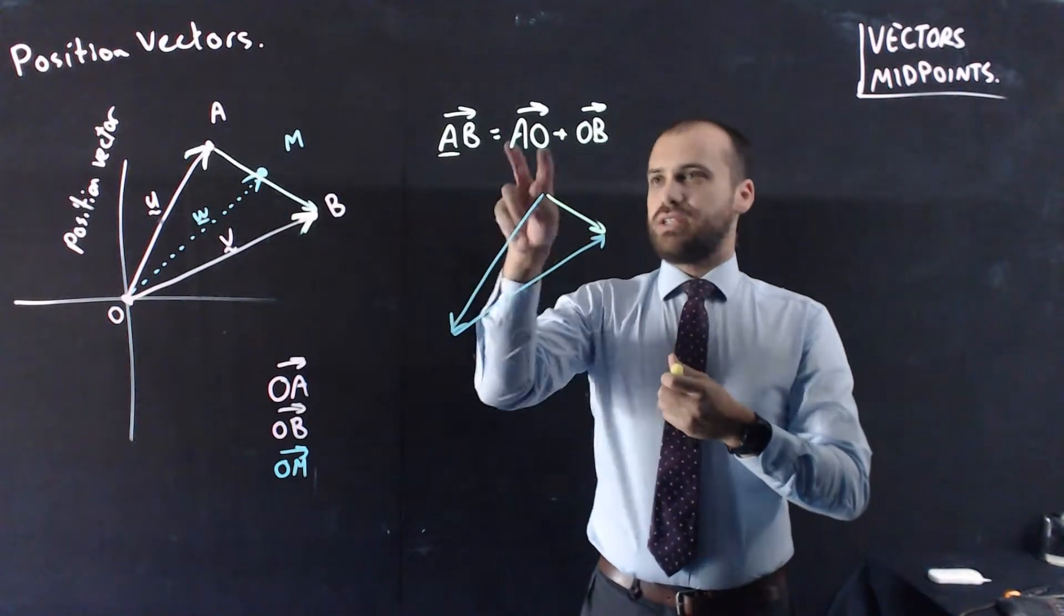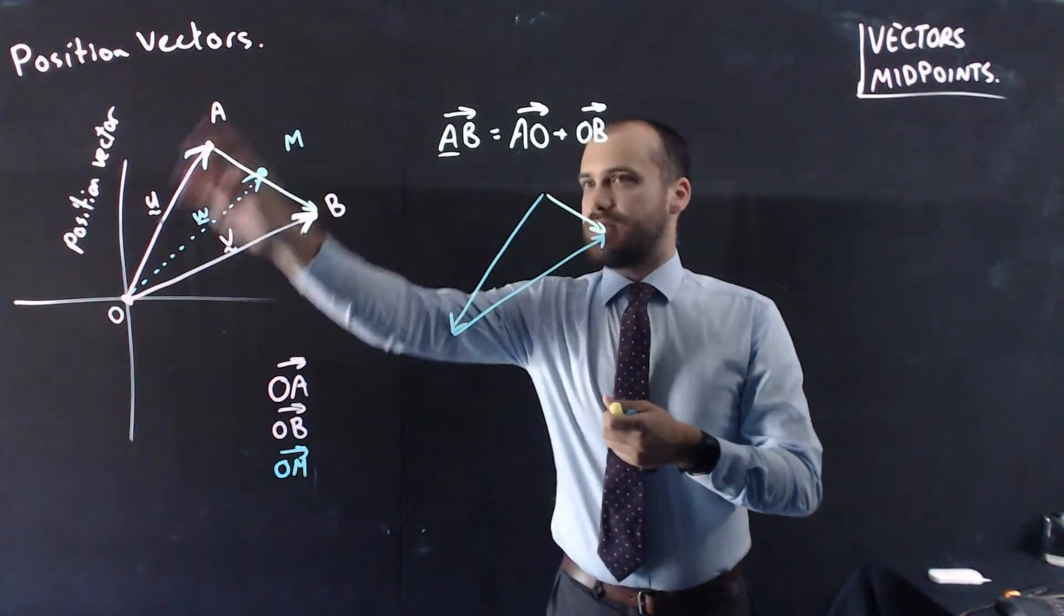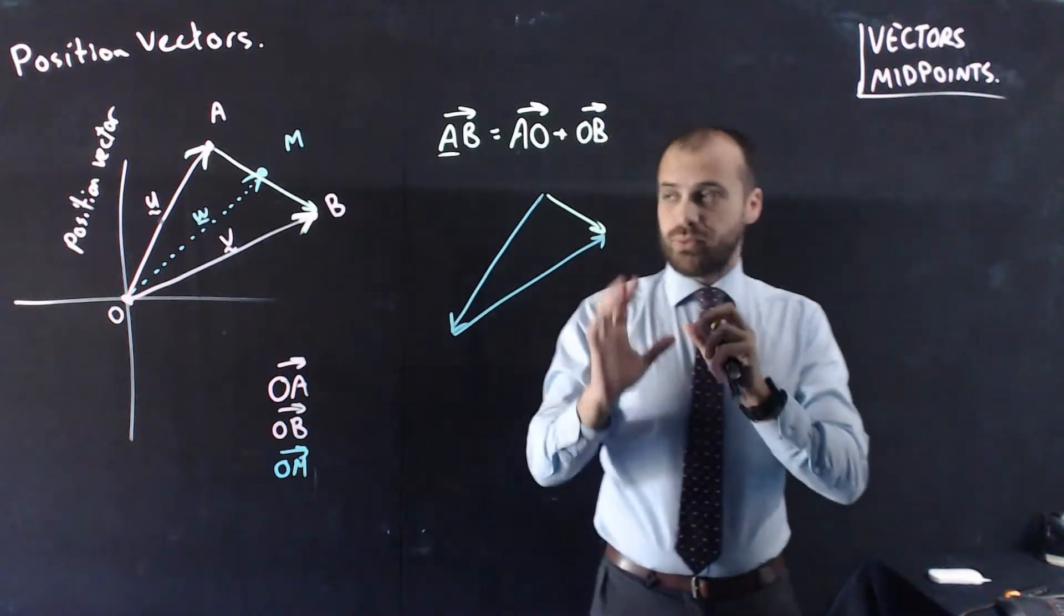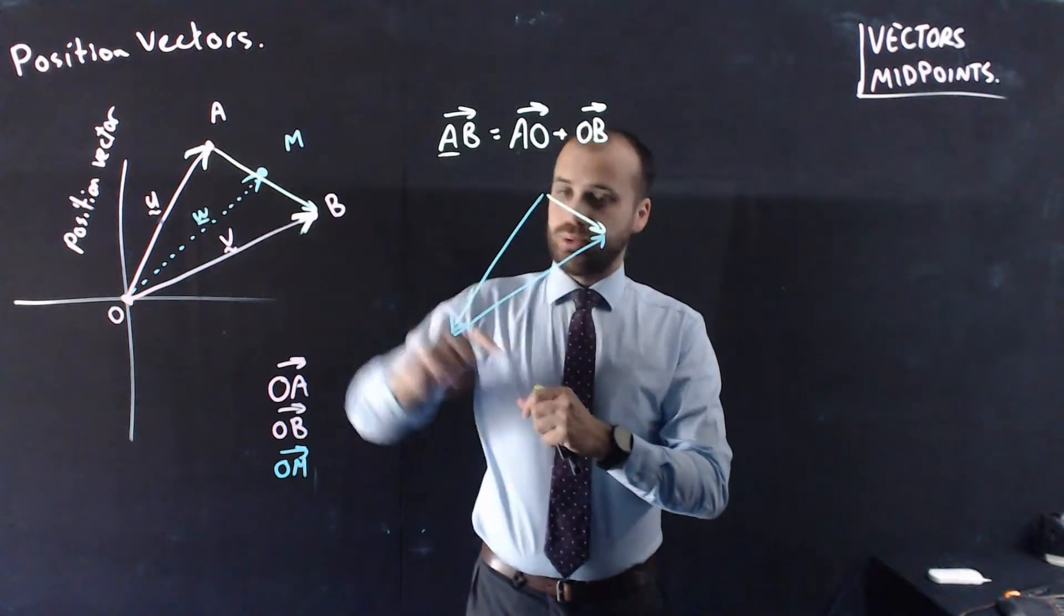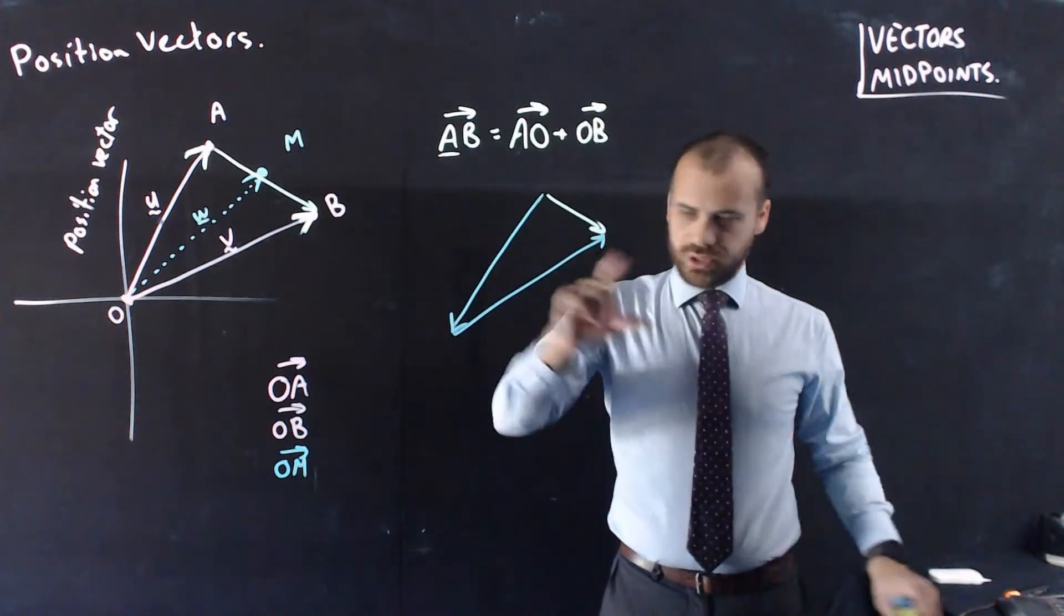So, to add two position vectors, the first one, flip it, so it's no longer OA, it's AO, multiply it by negative one, and then add OB to it. All right, that's only our first step. Now I've got this blue line. What am I going to do with it?